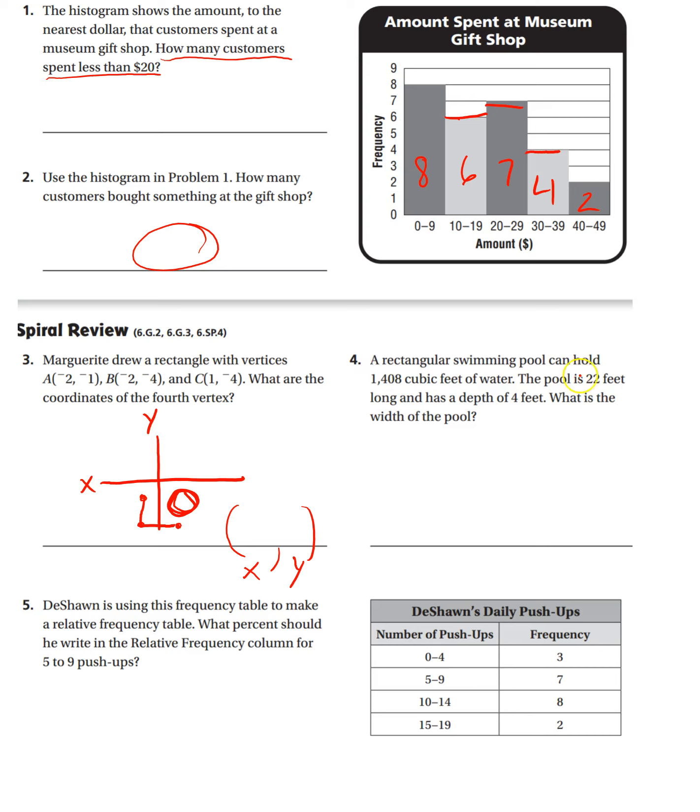Okay, number four, a rectangular swimming pool can hold 1,408 cubic feet of water. The pool is 22 feet long and has a depth of four feet. What is the width of the pool?